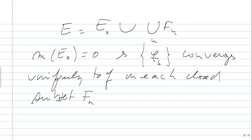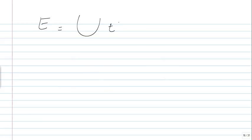This conclusion stays valid even if the measure of E is infinite. When the measure of E is infinite, you take E as the union of E intersect [-N, N] for N greater than or equal to 1. The set E intersect [-N, N] has finite measure, so we can apply Egorov's theorem to each one of these sets.